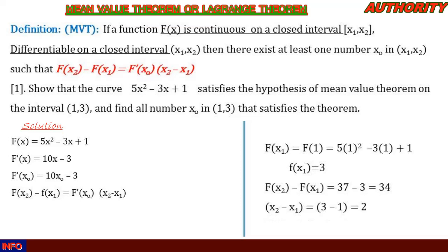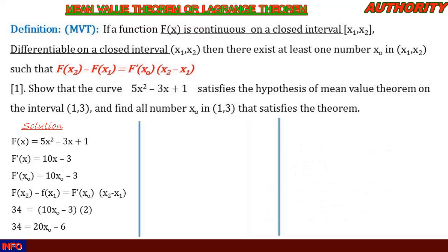Now let's substitute in. We have 34 = (10x0 − 3) × 2. Expanding the right-hand side: 2 × 10x0 = 20x0, and 2 × (−3) = −6. So 34 = 20x0 − 6. Taking 6 to the other side: 34 + 6 = 20x0, giving 40 = 20x0. Dividing both sides by 20, we get x0 = 2.